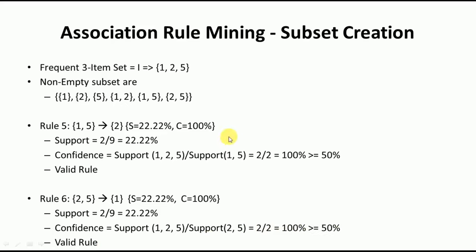This is how we calculate the rules and check whether a particular rule is valid or invalid depending on the minimum support and minimum confidence. In the Apriori algorithm, we first identify the frequent item sets, then write the rules depending on the minimum support and confidence. I hope this concept is clear. If you like the video, do like and share with your friends, and press the subscribe button for more videos. Thank you for watching.